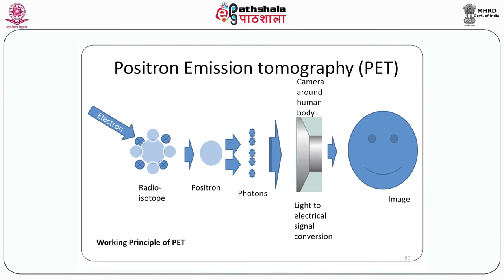Positron emission tomography is based on the physical principle of positron emission. Some radioisotope substances, when bombarded with electrons, start emitting positrons. This substance, when injected into the human body, goes to various organs and starts emitting positrons. These substances have special affinity to particular organs, so only that particular organ emits positrons. These positrons are captured by an array of scintillating crystals placed all around the body. The scintillating crystals convert these positrons into photons — normal light — which is then converted into an electrical signal by phototransduction. This varying electrical signal creates an image in the computer.